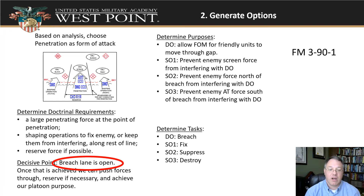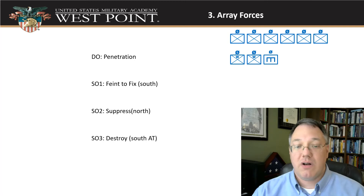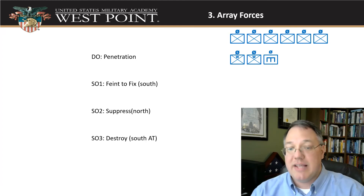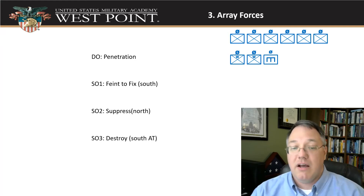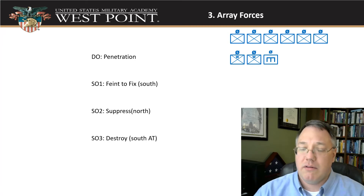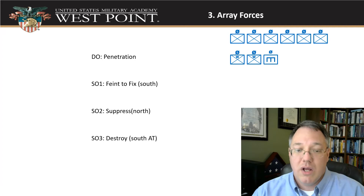Our next step is to array our forces. I start with the elements I need from the previous step: my decisive operation and my three shaping operations. I write down what each is trying to do — I've got the penetration, a feint to the south to fix the screen line, a suppressing shaping operation, and a destroy shaping operation to deal with the anti-tank team. I've got six rifle teams, two heavy weapons teams, and one engineer team attached. The engineers naturally go into the decisive operation element since it has to do the breach.